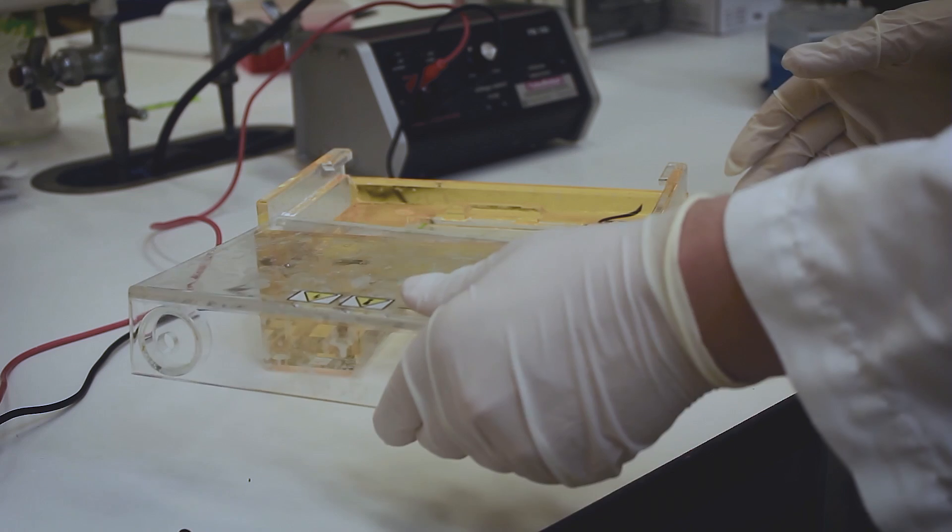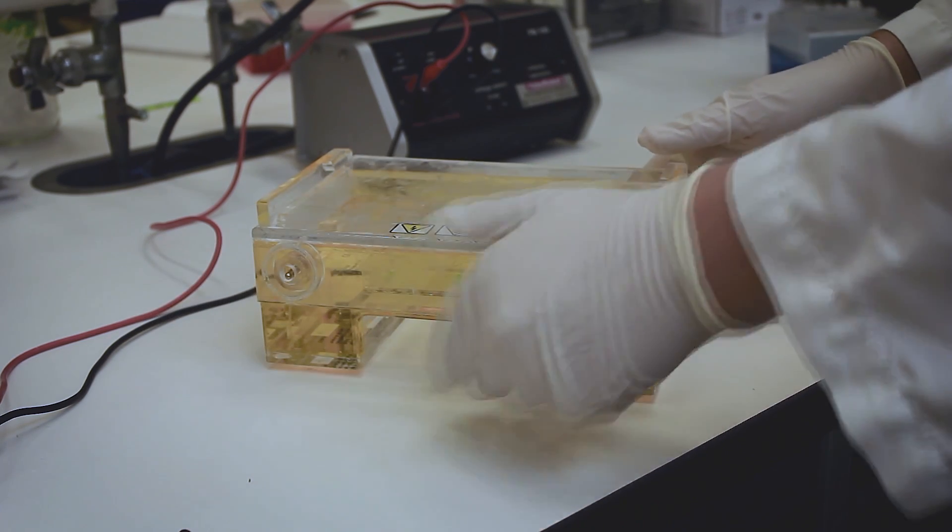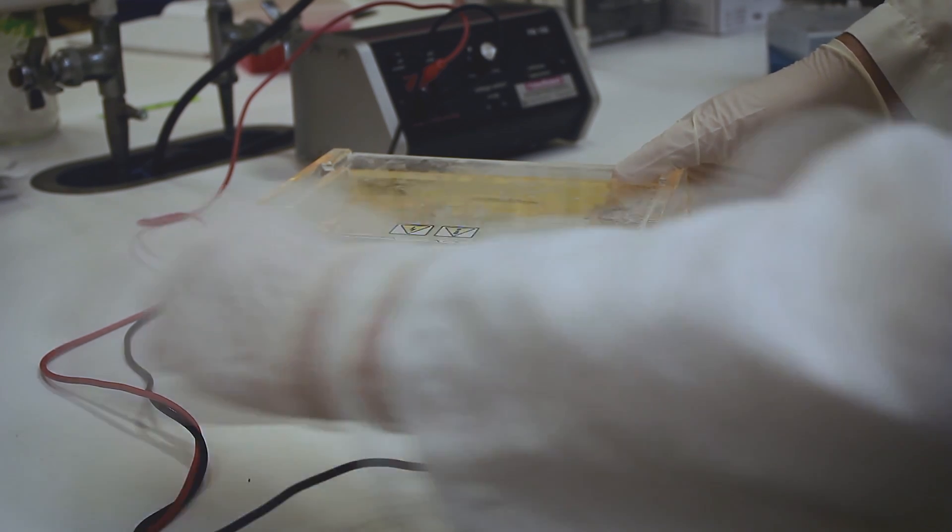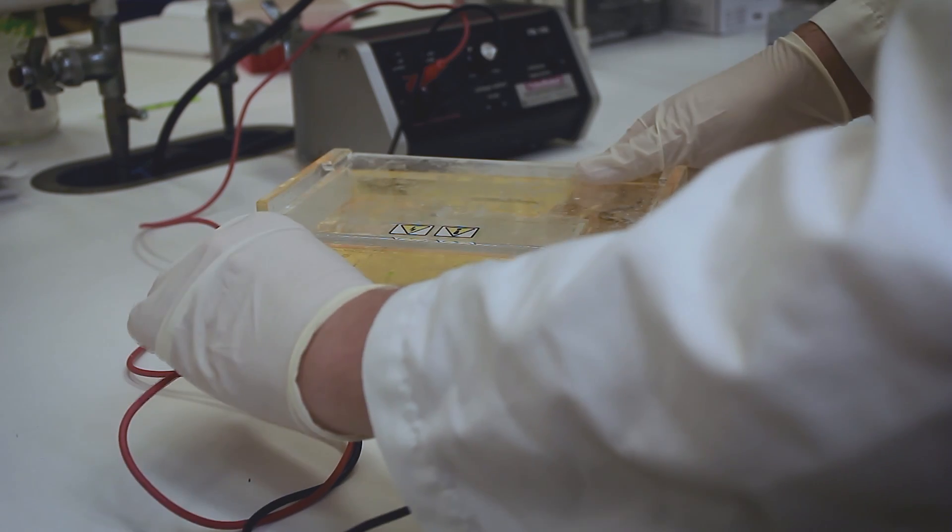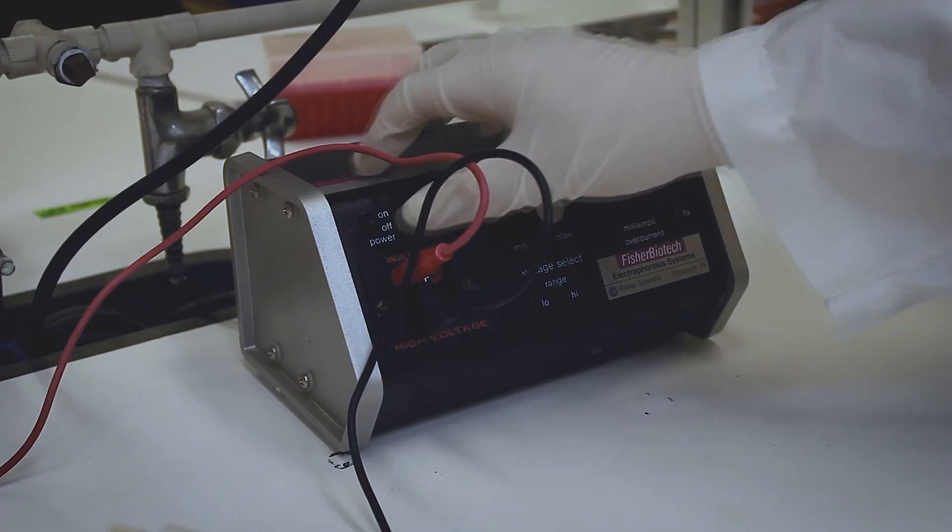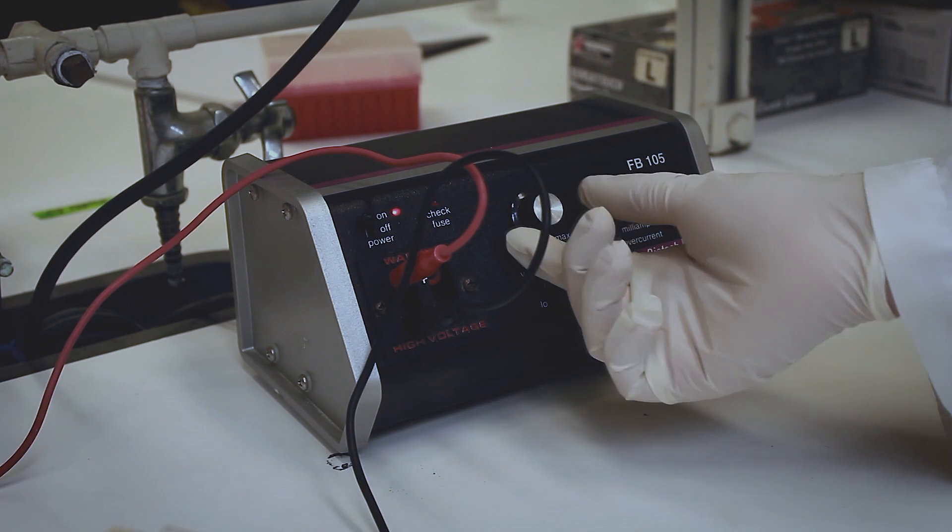Once all products are placed inside their individual wells, place the cover on the gel box and turn on the power supply. Be sure that the power supply is set to about 106 volts. Let the gel run for about 20 minutes.